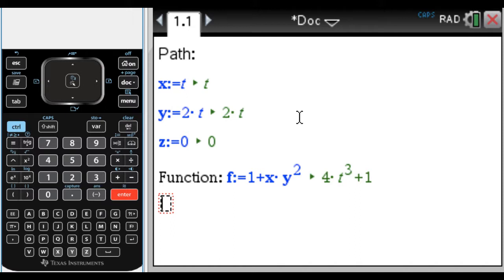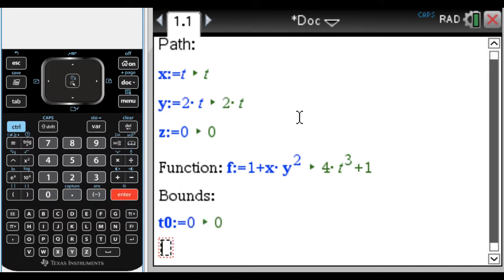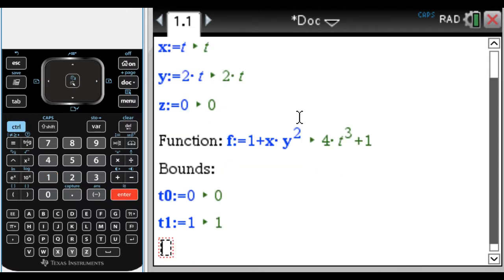That's not everything I need to do. I need to know the T bounds. So I'm going to say bounds and do a math box here. So T zero, set equal to, initially it's going to be zero and then T one. We're going to go from zero to one.